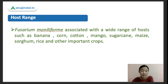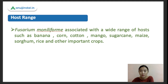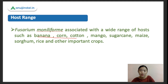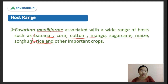Now let's go to the host range. Fusarium moniliforme is associated with various wide host ranges. The major hosts include banana, corn, cotton, mango, sugarcane, maize, sorghum, rice, and other important crops. These are the main crops affected by this fungus.